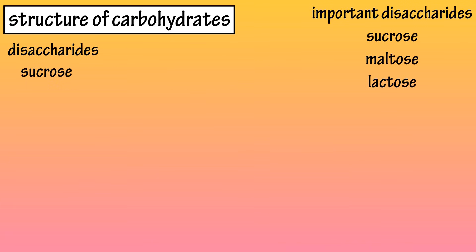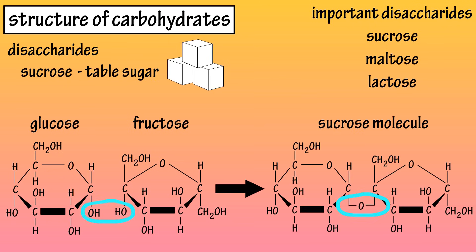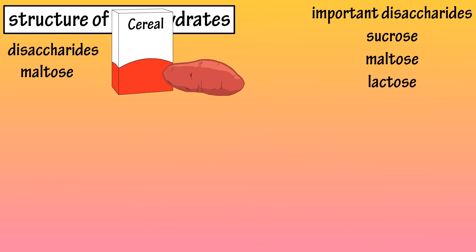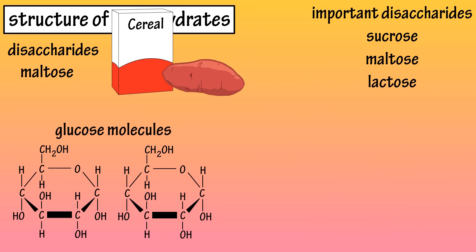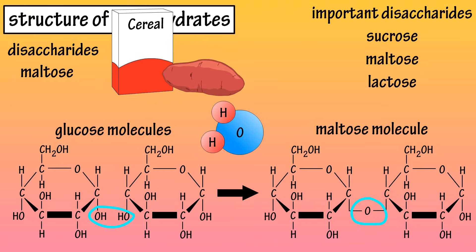Sucrose, or table sugar, is formed when a glucose and fructose molecule bond together, as you see here. As this bond takes place, a water molecule is removed. Maltose, which is found in sweet potatoes and many cereals, is the result of two glucose molecules bonding together. Again, a water molecule is removed during the bonding.